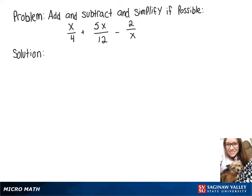In this video, we're going to do x over 4 plus 5x over 12 minus 2 over x. So what we need to do is give each of those fractions a common denominator.